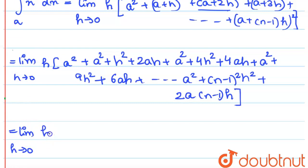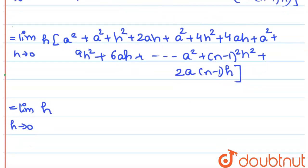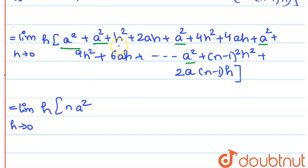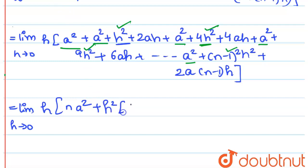After opening, we can see that a² appears n times, so we write n·a². Then taking h² common from the squared terms gives h²(1 + 4 + 9 + ... + (n-1)²). Taking 2ah common from the linear terms gives 2ah(1 + 2 + 3 + ... + (n-1)).